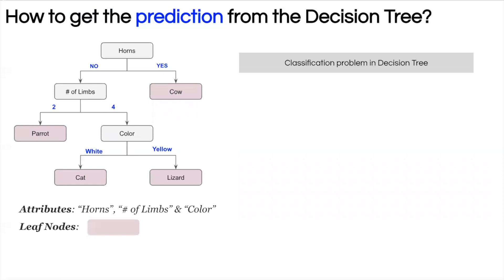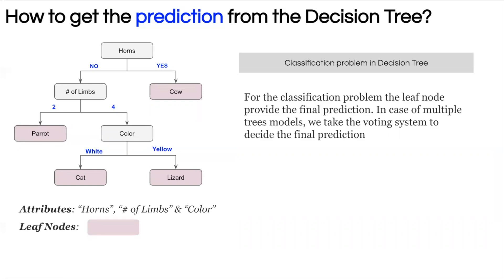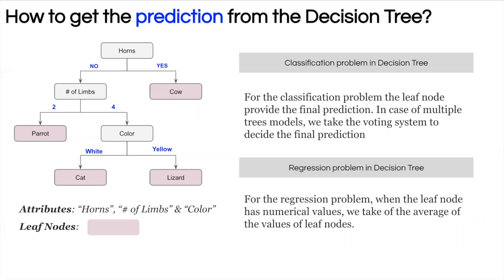There are two types of trees: classification trees and regression trees. In the animal example, the output is categorical, so it's a classification tree. In a regression tree, the output is a numerical variable. In both cases the output is decided by the leaf node. For new data, you map it through the tree to find which leaf node it falls into — that is the predicted class. For regression trees, you may compute the average, median, or mean at the leaf.